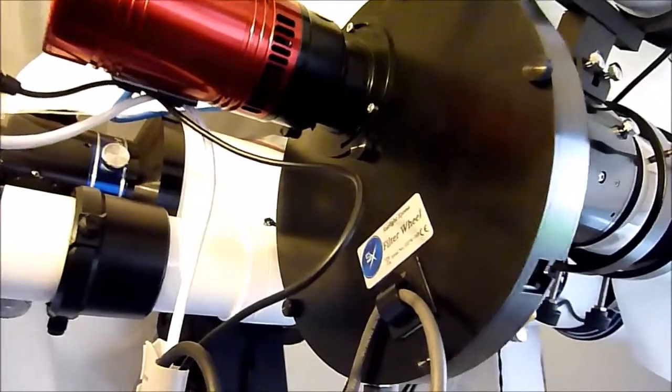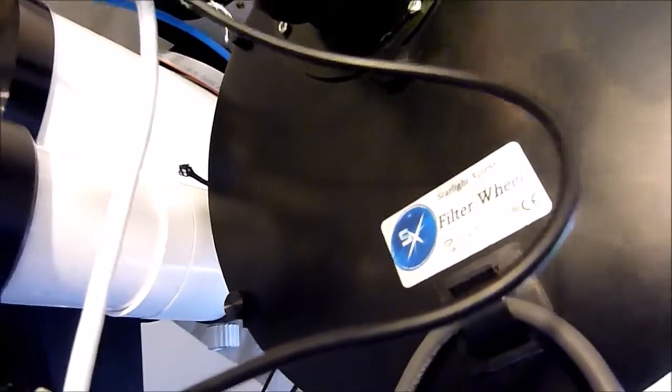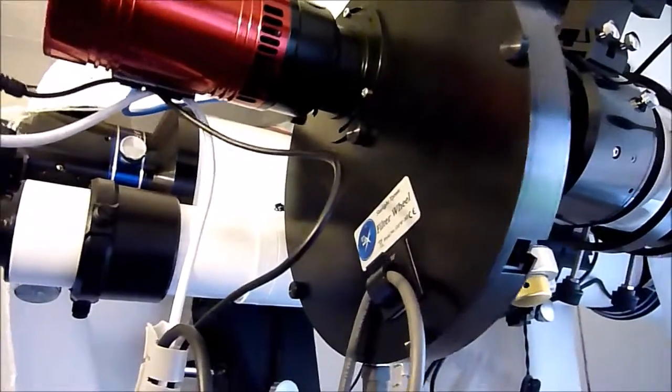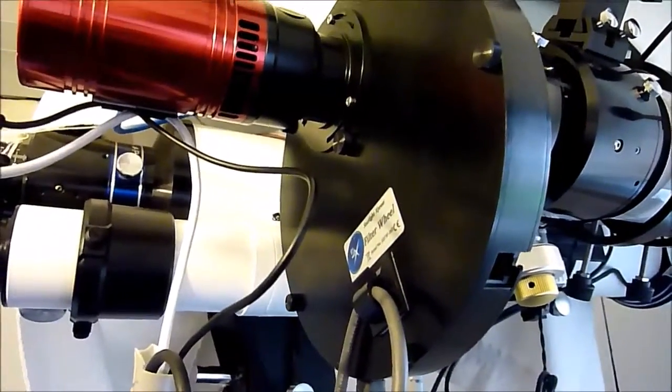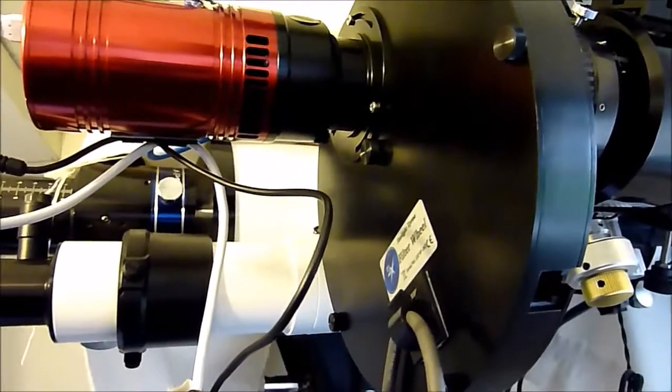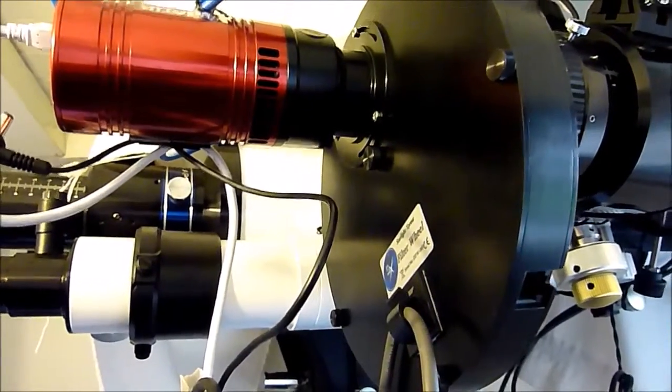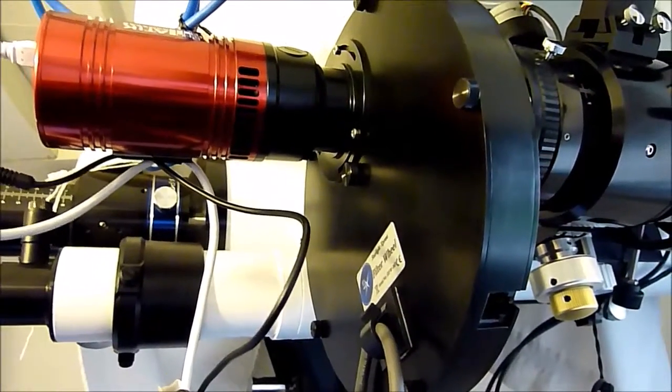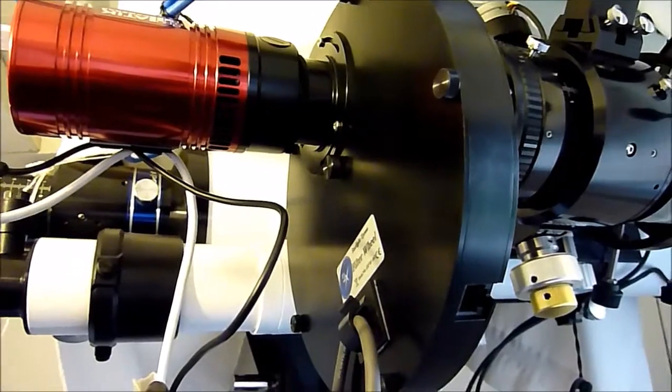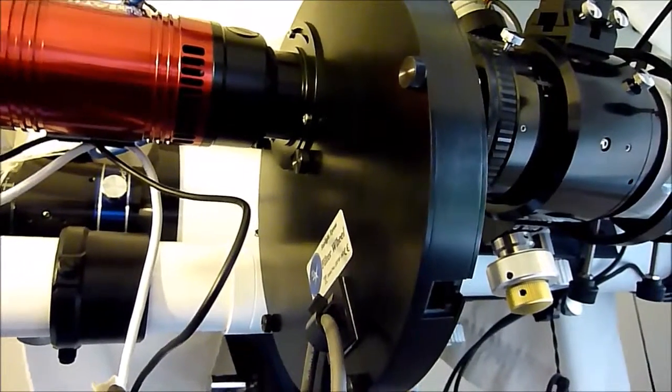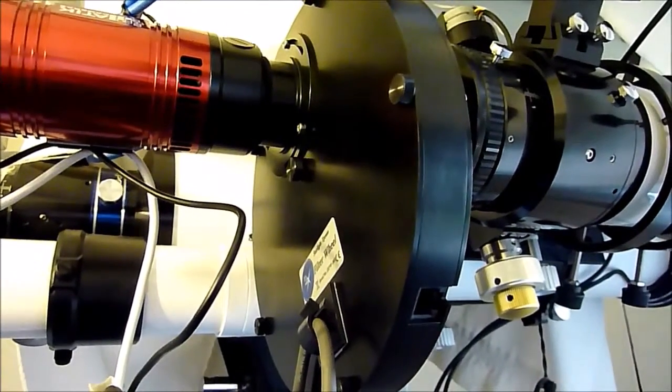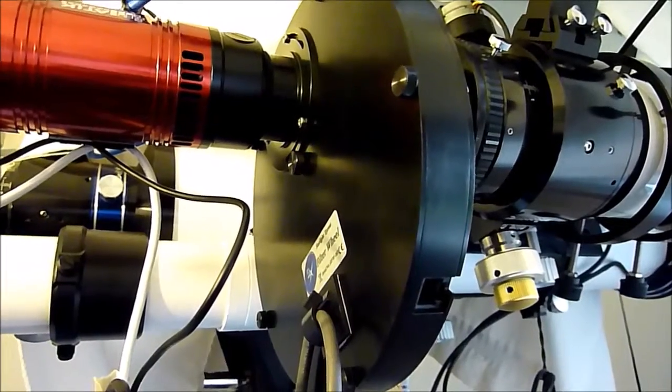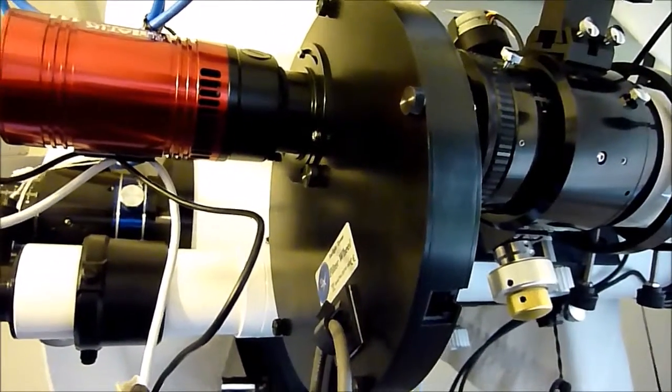That was the familiar sound of the Starlight Express filter wheel. The problem I had with it was that it constantly rotated and wouldn't stop. When you first turn it on, you get that initialization and it rotates once all the way around and then stops, ready for use. But when I turned it on last time, it just kept going round and round and round and wouldn't stop at all.